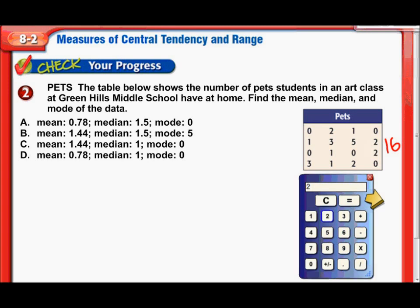So in the first row I have 2 plus 1. In the second row I have 1 plus 3 plus 5 plus 2. In the third row I have a 1 and a 2. And in the last row I have a 3, a 1, and a 2. So that equals 23. Now what I need to do is divide that 23 by 16. So 23 divided by 16, there's our 1.4375. So there's our mean.